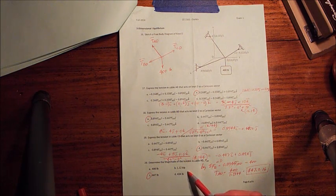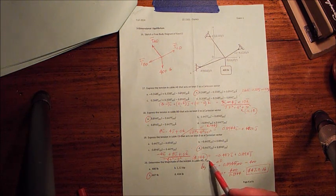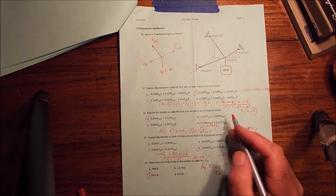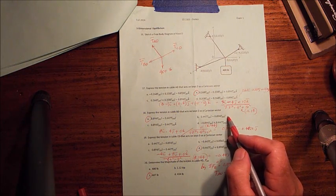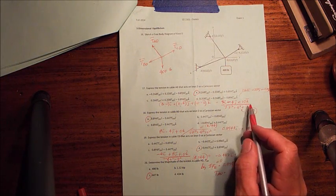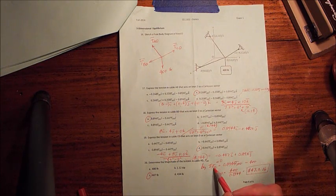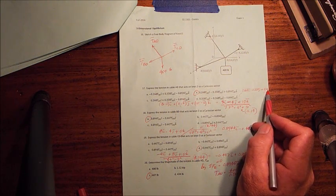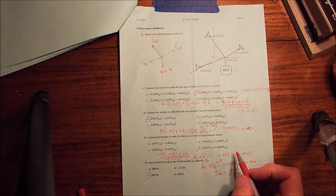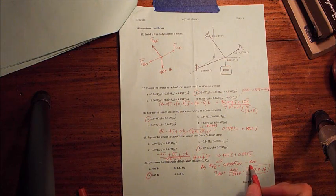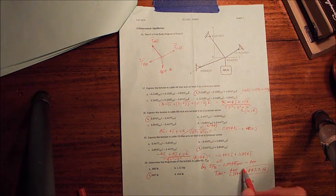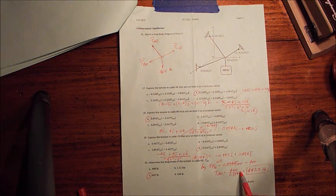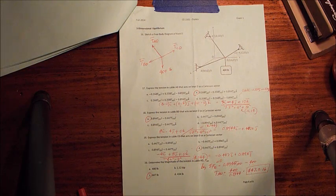Finally, number 20 is magnitude of the tension of the cable AD, TAD. Neither BD nor CD has any Z component or K component. So if I do a sum of forces in the Z direction, the only thing I have in the Z direction is 0.894 positive in TAD. And the force itself, the weight, 400 pounds. I divide, set those equal to each other, divide by 0.8944, I get TAD is 447.2 pounds.